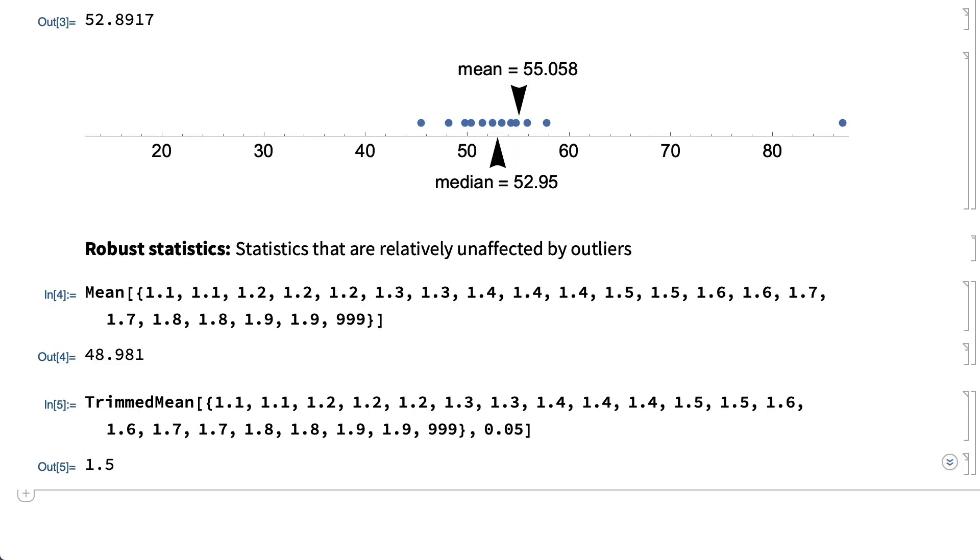For comparison, this shows the trimmed mean function applied to that list of numbers. The second argument in the trimmed mean function specifies the fraction of smallest and largest values to drop from the list. Here, the second argument is 0.05, which for this example drops the first and last elements in the list.